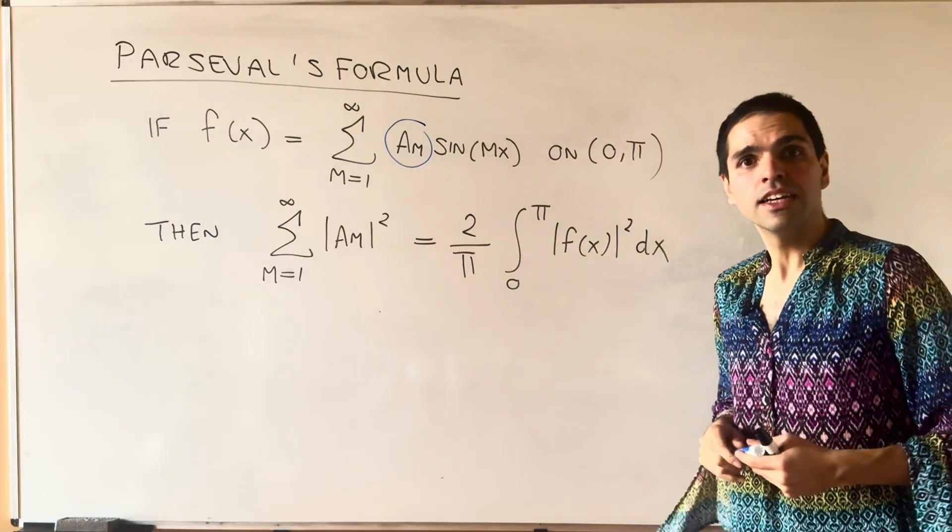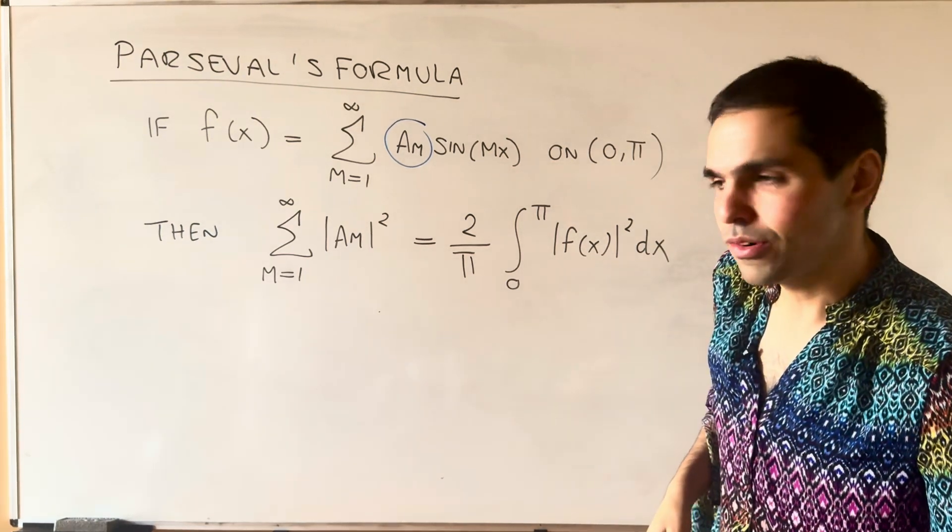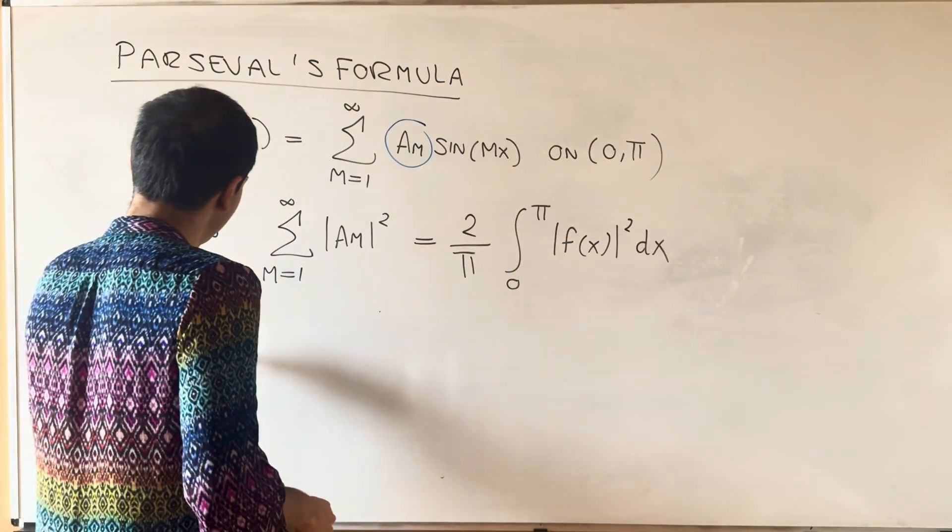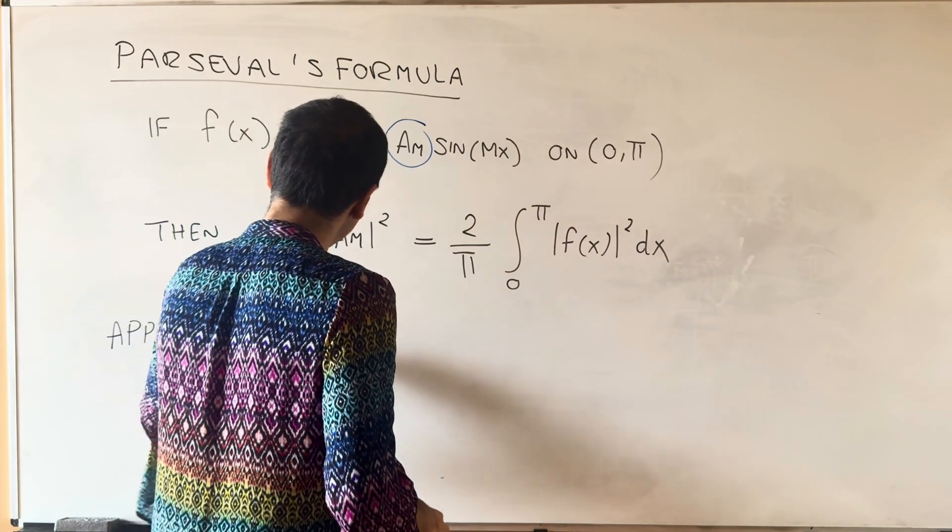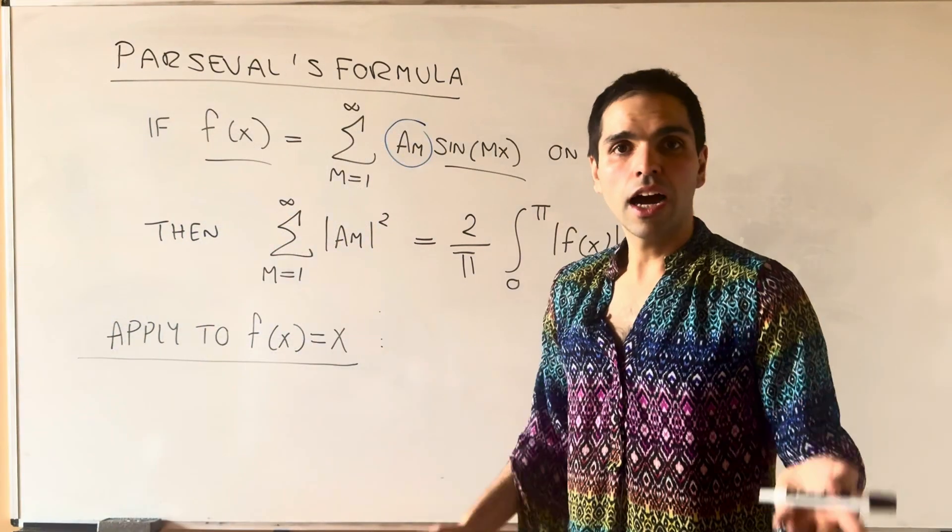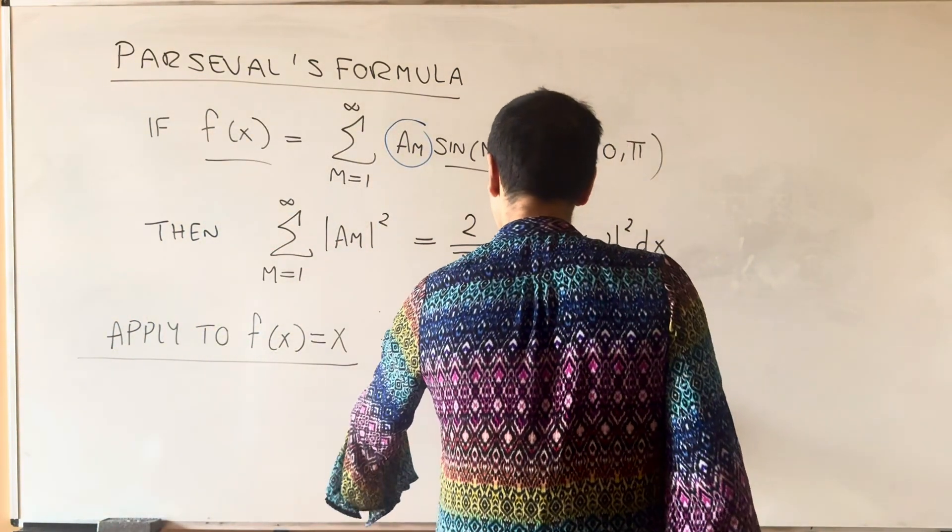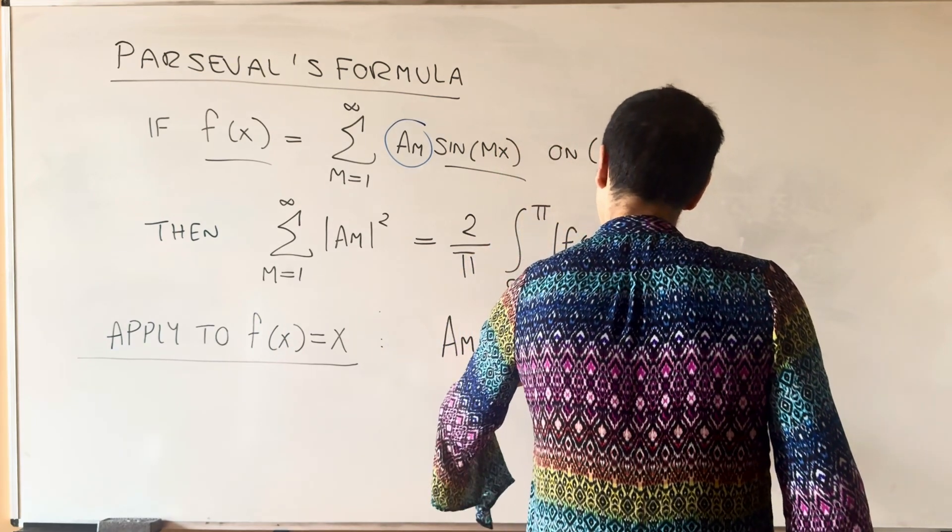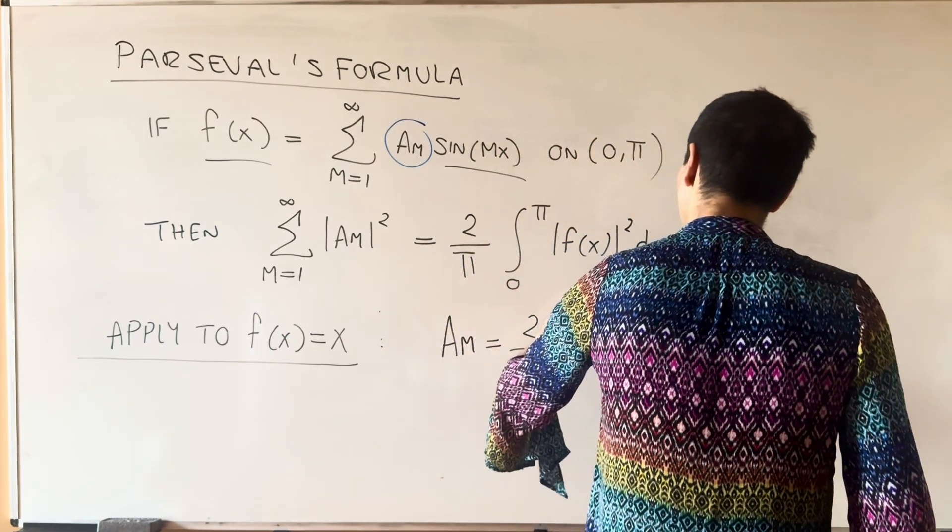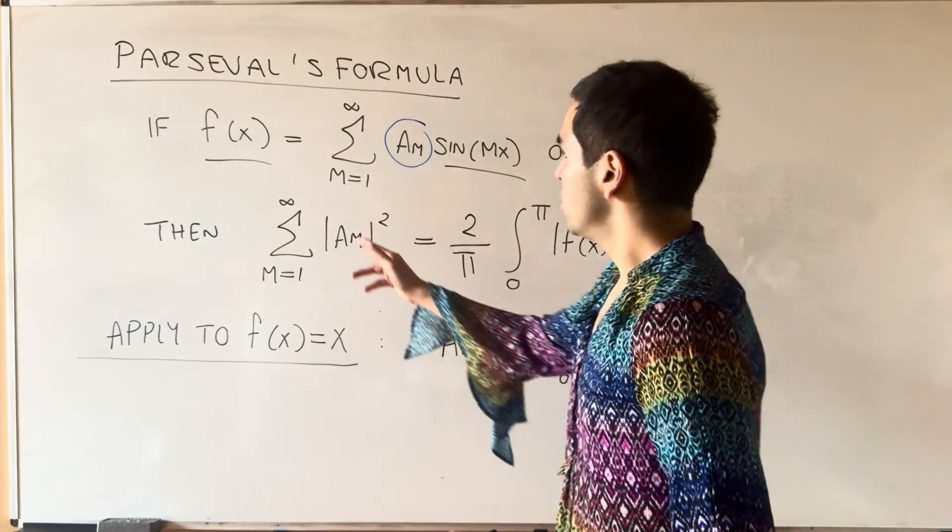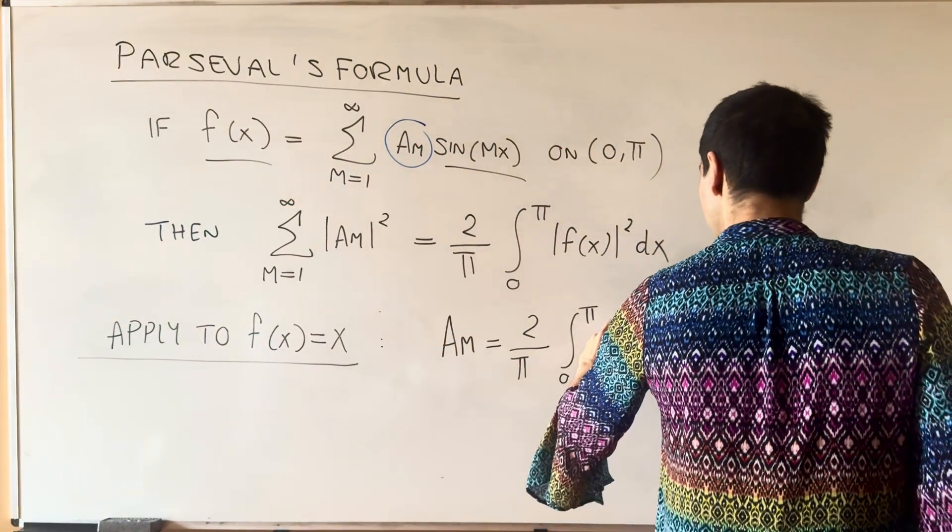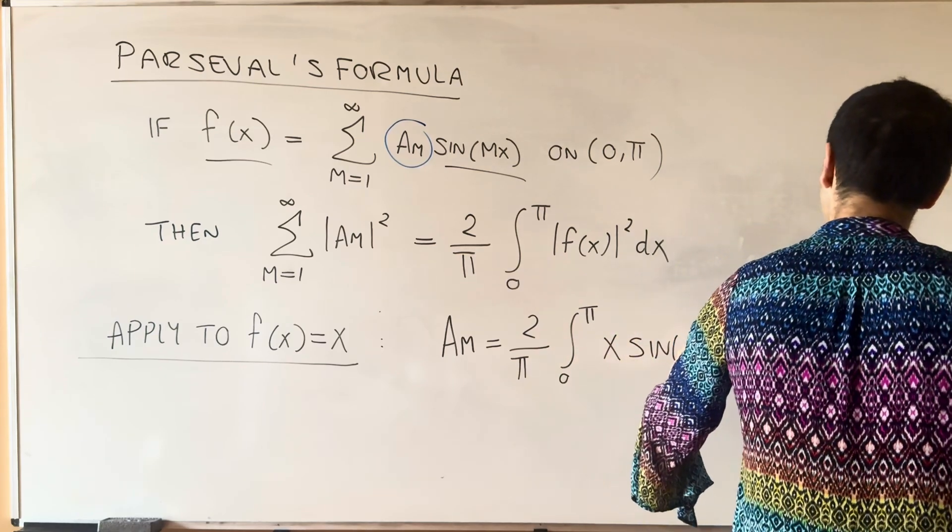we want to apply this to the case f(x) = x. So apply to f(x) = x. Now, if you use the Fourier sine formula, we have am is 2 over π, integral from 0 to π of f times sine of mx, which in this case is x sine(mx) dx.